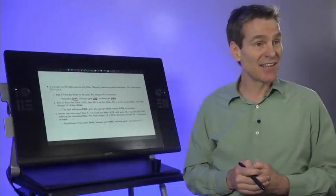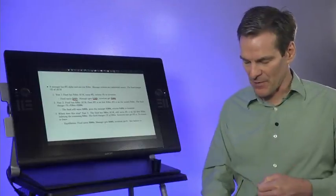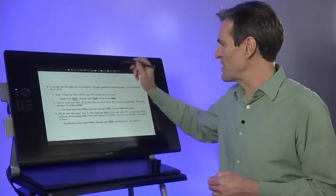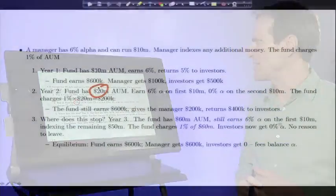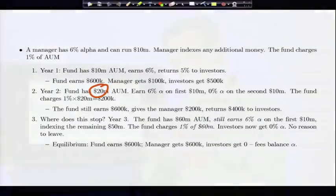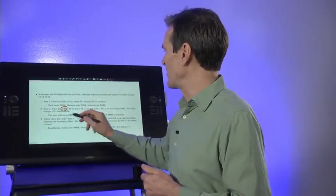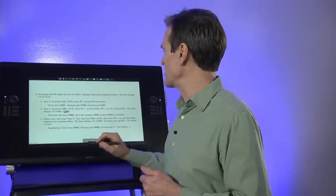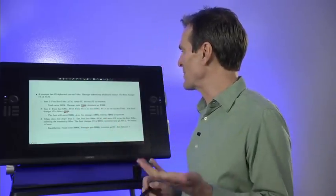Investors see that and say, 'Wow, this guy knows what he's doing. We'll give him more money'—a perfectly rational thing to do. So year two, the fund goes up to $20 million assets under management. Now what happens? The manager earns 6% on the first $10 million, but the second $10 million he just puts in the index. But now with $20 million assets under management, the fee is $200,000, not the $100,000 from the first year. The fund still earns $600,000. The manager gets $200,000; investors get $400,000.